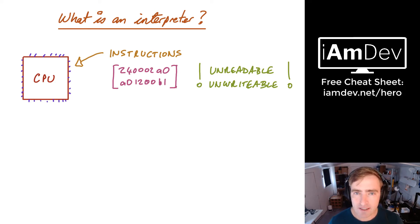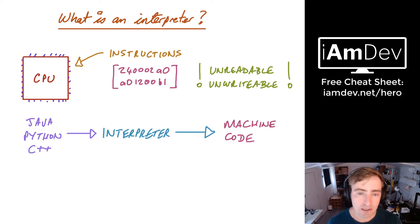With an interpreter, it's different to a compiler in one way. So if you have a language like Java, Python, or C++, when you write the code, you don't compile it. You bundle it up and you send it out into the wild for people to run.